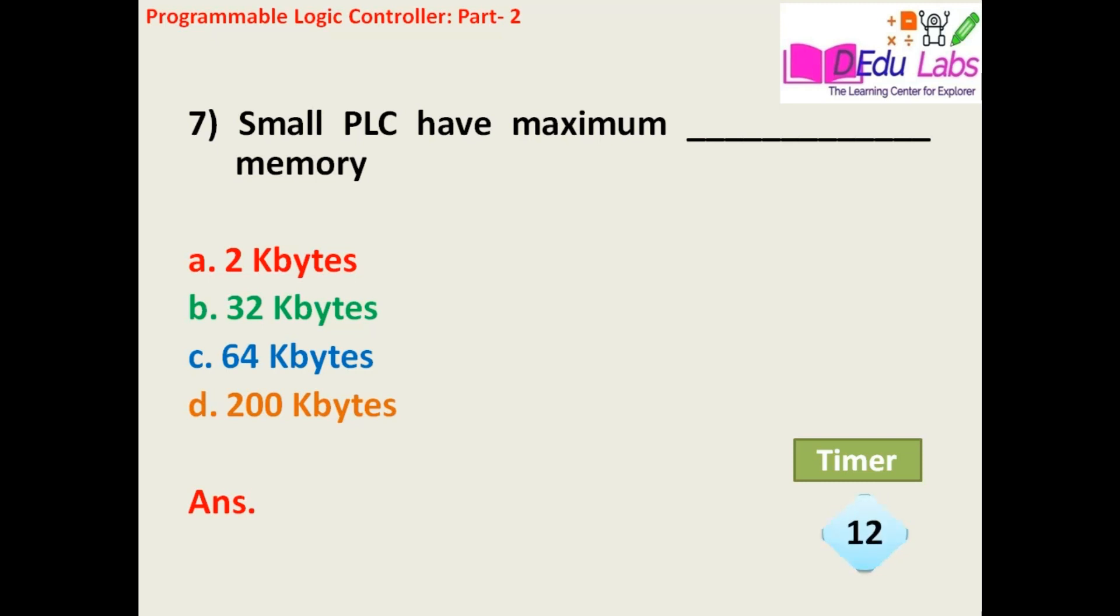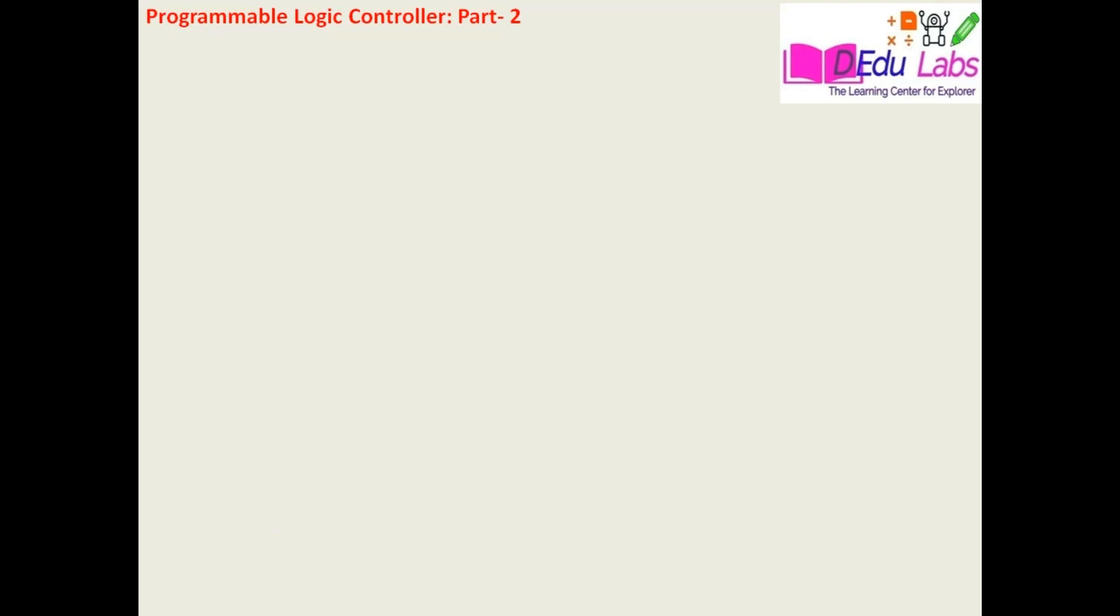The answer is 2 kilobytes. Memory requirement is a very important parameter for selection criteria of the PLC. The disadvantage of this small type PLC is that it is used up to 2 KB. That means if your program size is very big compared to 2 KB, the program is not compiled and an error is coming.